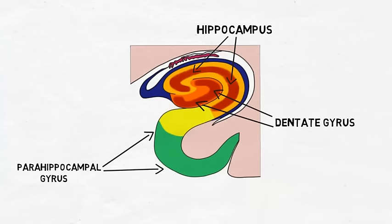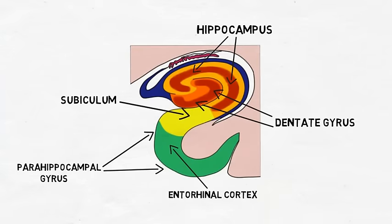The hippocampal gyrus contains areas called the entorhinal cortex and subiculum, which are both involved in the flow of information through the hippocampus.